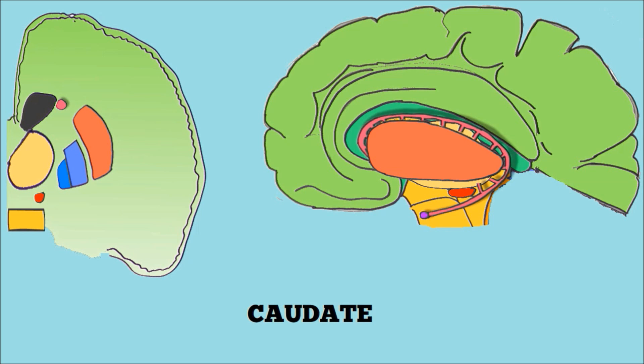Next we have the caudate, or the caudate nucleus, and this is innervated by lots of dopaminergic neurons. The caudate is involved in the integration of spatial information primarily. If we take the caudate and the putamen together, we get the striatum.